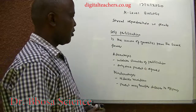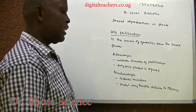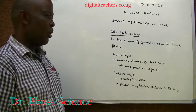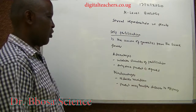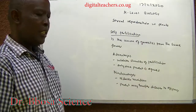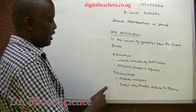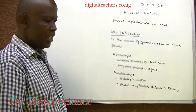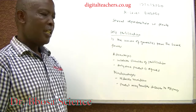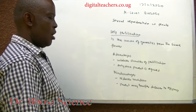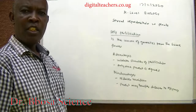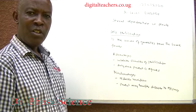Parthenocarpy is the development of a fruit without fertilization. Self-pollination is the union of gametes from the same flower. Advantages: increases chances of fertilization; only one parent is required. Disadvantages: reduces variation and adaptation to a changing environment; a parent may transfer diseases to offspring, especially genetic diseases.